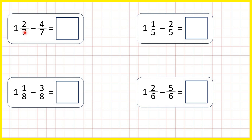One and two-sevenths is the same as nine-sevenths because one times seven is seven plus two is nine, and the denominator stays the same.